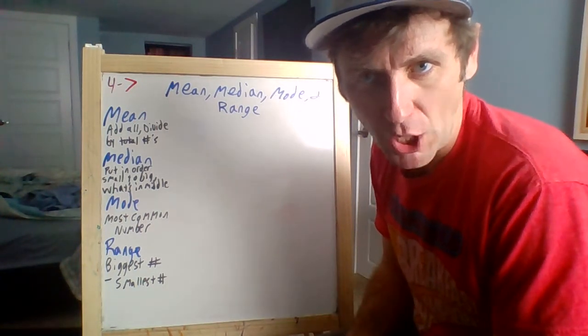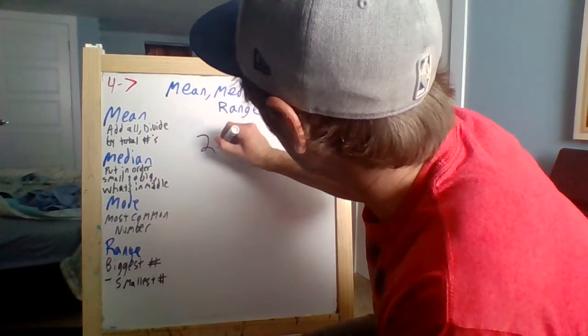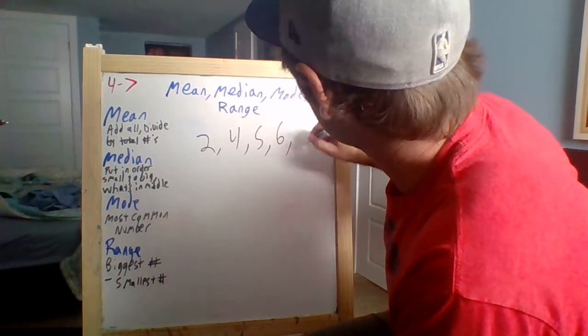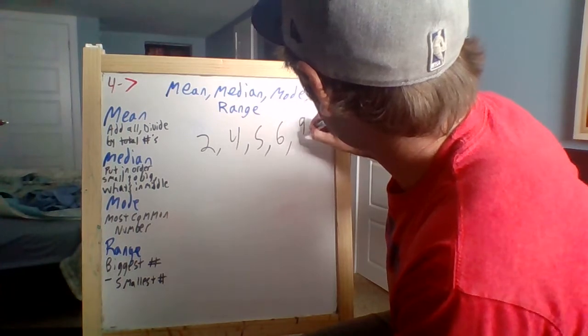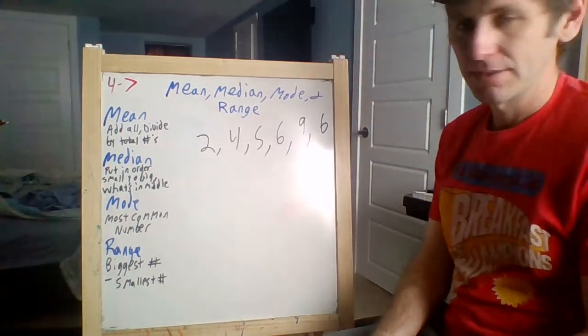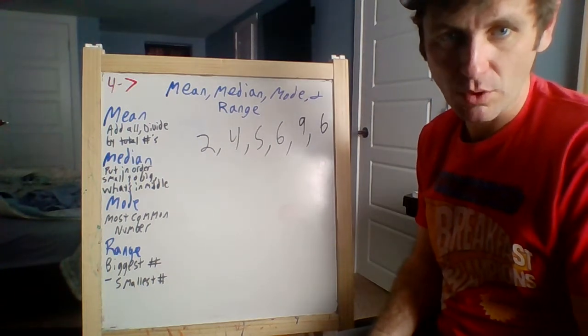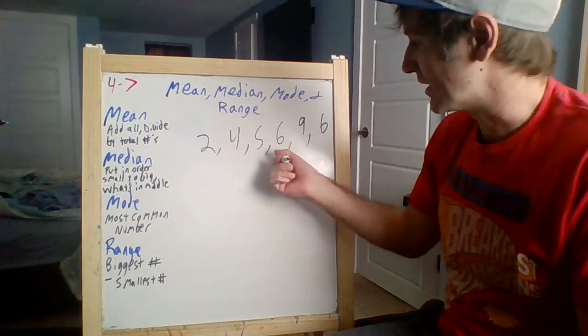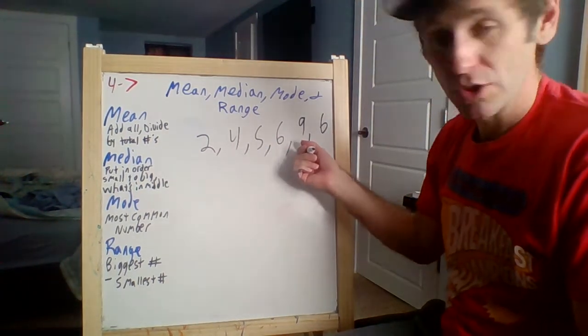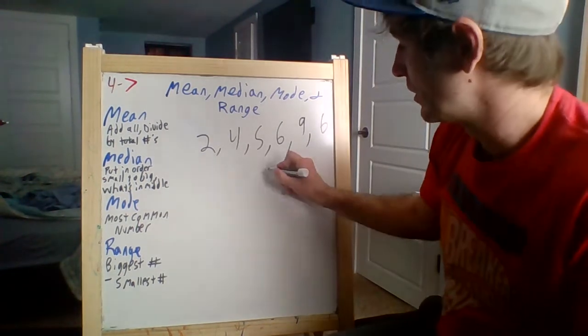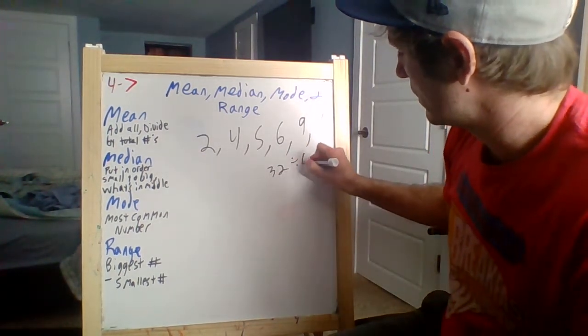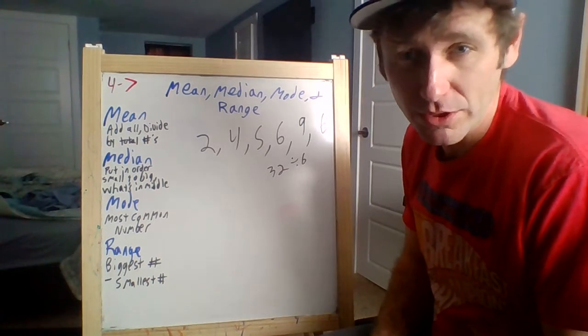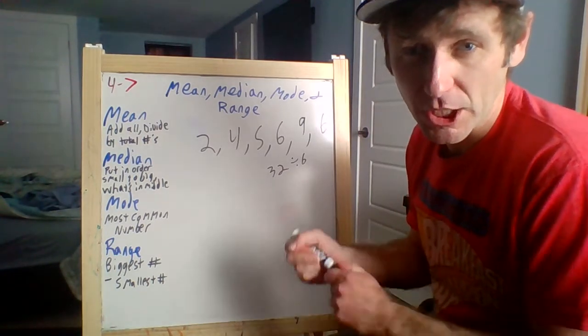So we've got 2, 4, 5, 6, 9, and 6. Well, let's add all those up. Let's do our mean first. 2 plus 4 is 6, plus 5 is 11, plus 6 is 17, 26, 32. 32 divided by 6—you do the math. What are we left with? 5.33.